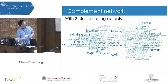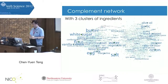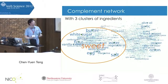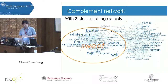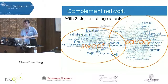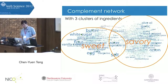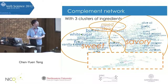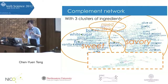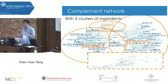Here I want to show you a visualization of the complement network. In general, we can identify three big clusters. The first is a sweet cluster — you can see ingredients like sugar, butter, white sugar, and flour. The second is a savory community, which includes garlic, olive oil, onion, and pepper. The last one is mixed drinks, where you will see vodka, pineapple juice, ice, and so on.